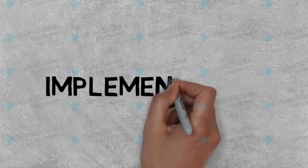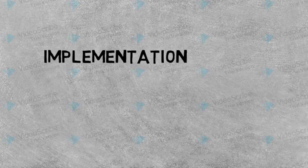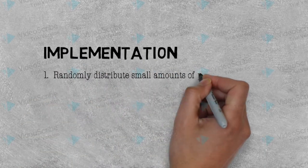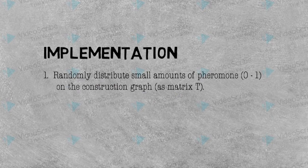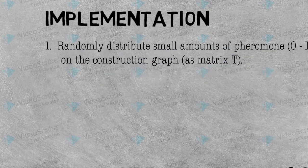Now let's look at how I implement it to solve the bin packing problem. Firstly, randomly distribute small amounts of pheromone, between 0 and 1, on the construction graph as matrix T.